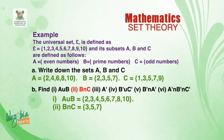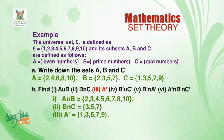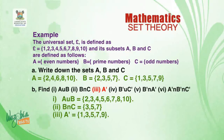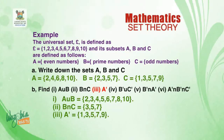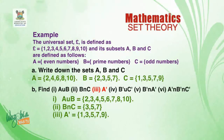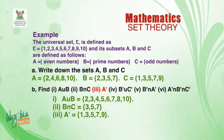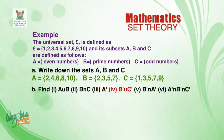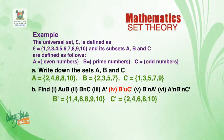A complement: looking at all numbers 1–10, A is the even numbers, so A complement contains the odd numbers: A' = {1, 3, 5, 7, 9}. We can also note that A' = C, and similarly C' = A, since each is the complement of the other.